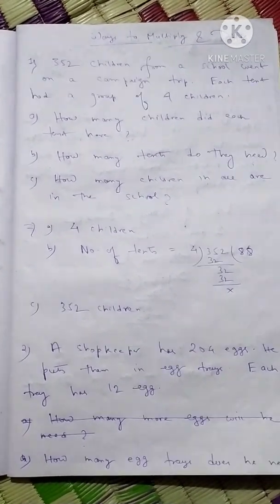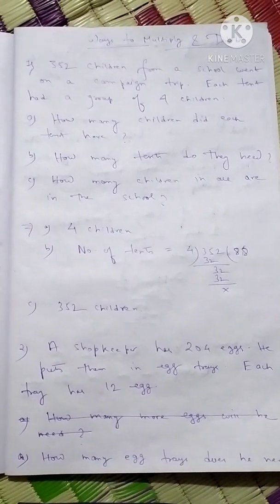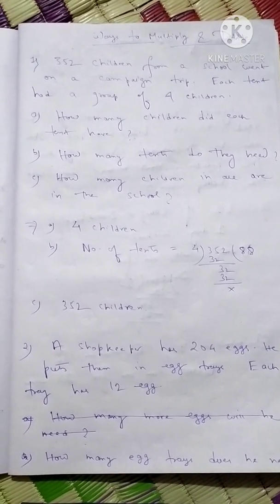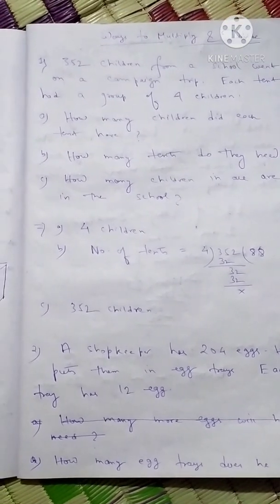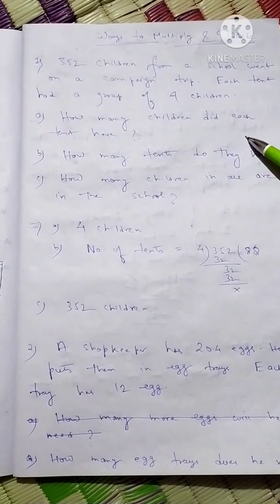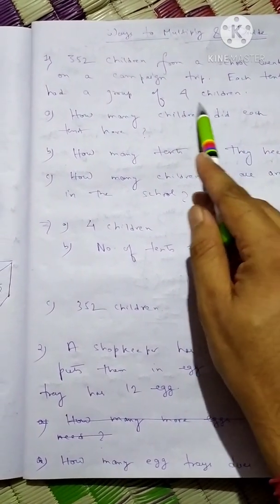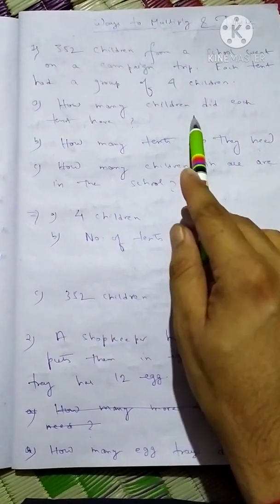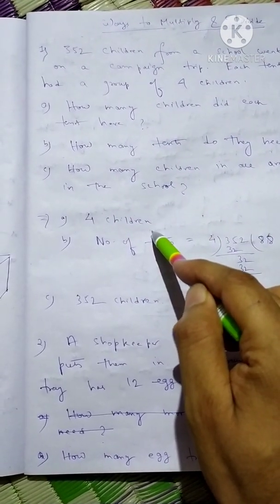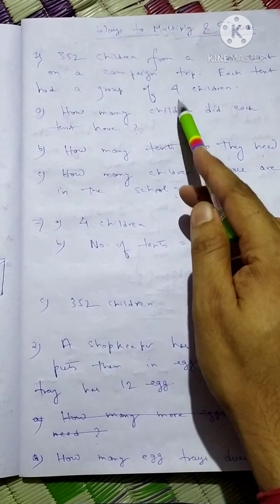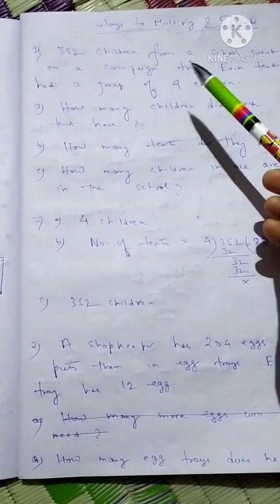Based on the given information you have to give the answer, so first read the question very carefully. For question (a), how many children did each tent have — the answer is already given in the question: each tent has a group of four children, so the answer is four children. For question (c), how many children in all are in the school — that is also given: 352.